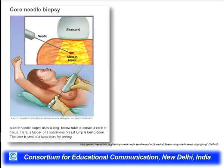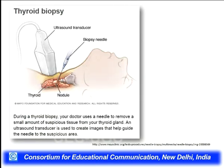The core needle biopsy uses a long hollow tube to extract a core of tissue. A biopsy of the suspicious breast lump is shown here — the core extracted with the help of an ultrasound transducer is then sent to the laboratory for further testing.